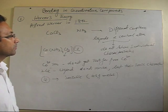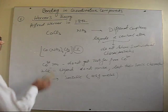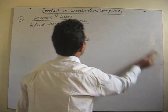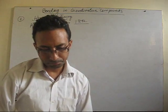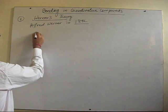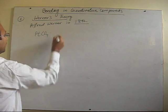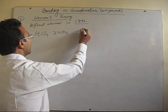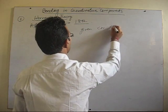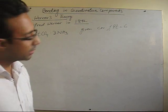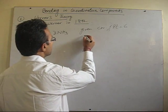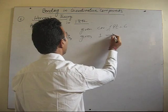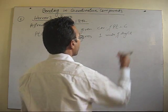This is one very important aspect of Werner's theory. Now, let me do some more examples. There is a question we can solve. A complex of platinum chloride and ammonia is given, and the coordination number of platinum is six.